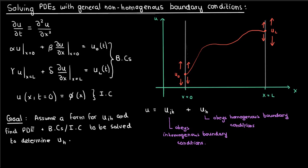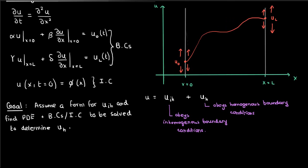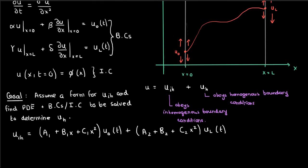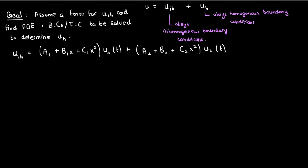And the most general form we can come up with for UiH is an equation that's quadratic in x, and the terms quadratic in x multiply the time-dependent boundary conditions U0 and UL. Now you might wonder why it's quadratic given that we use straight lines for the steady-state solution in the last video.